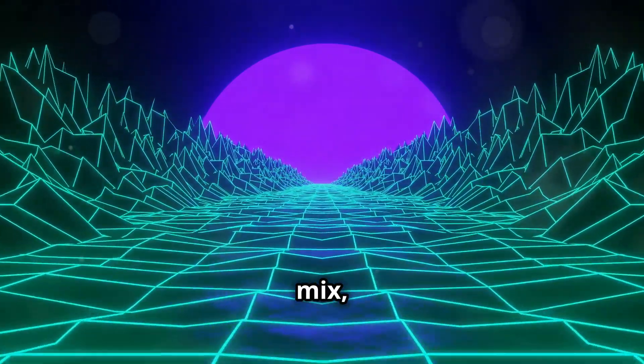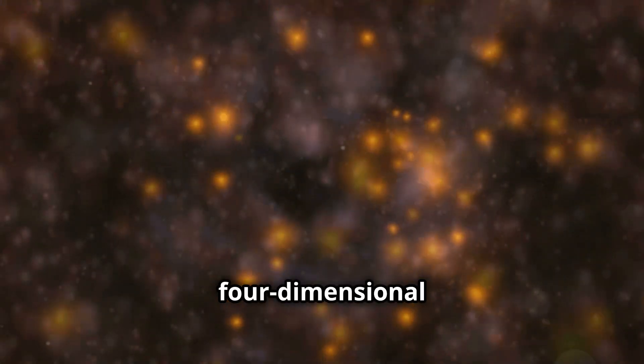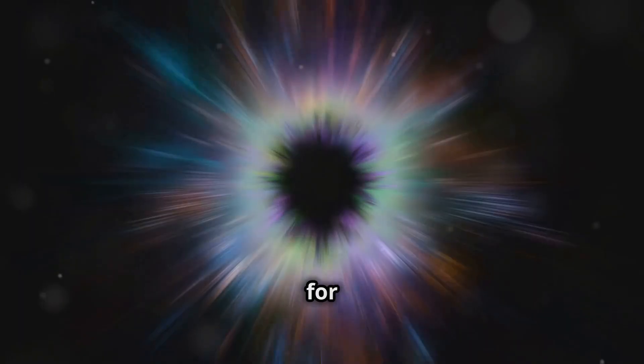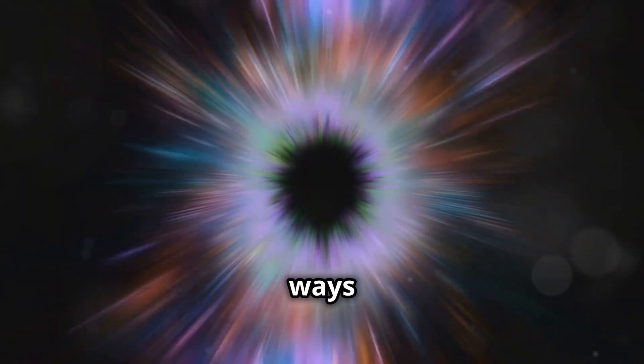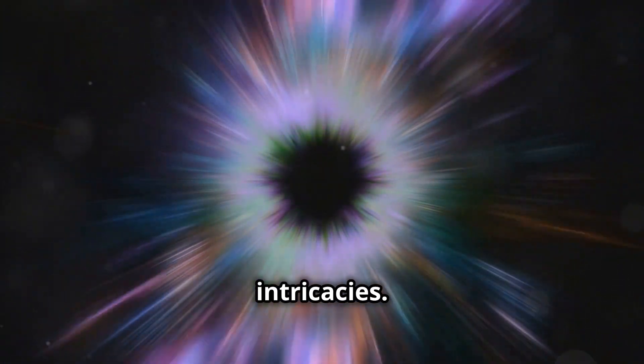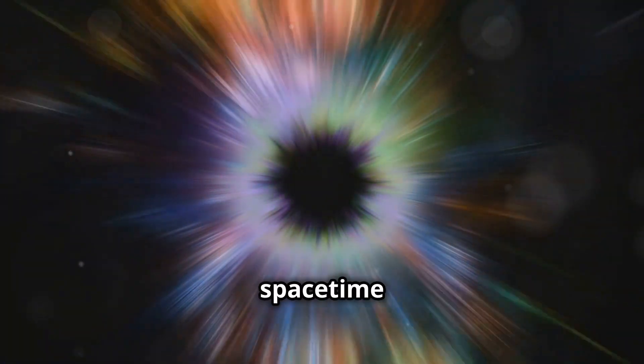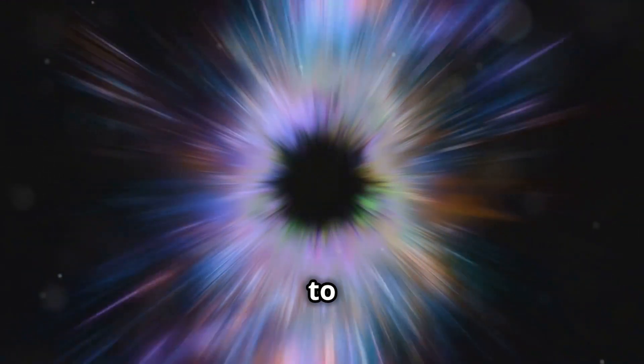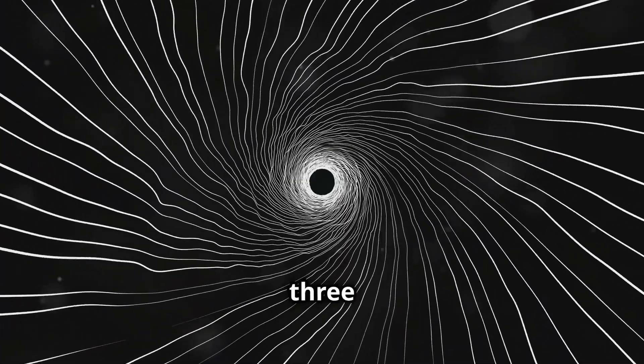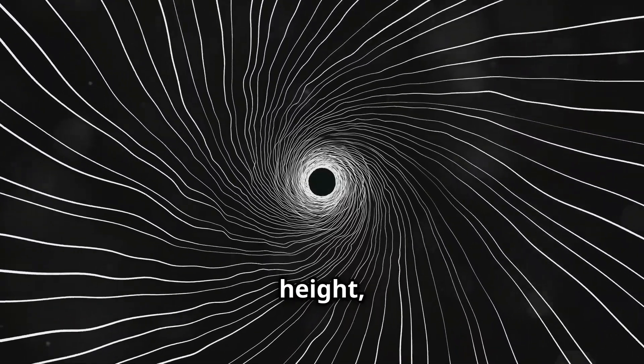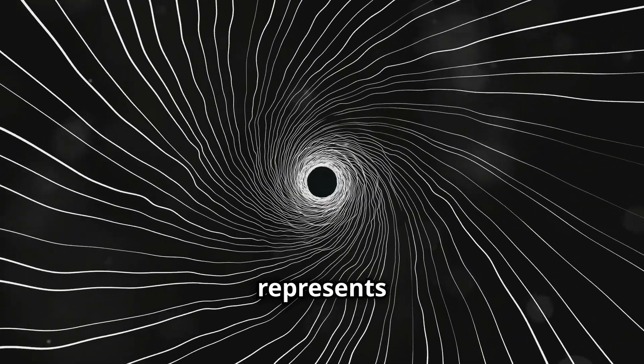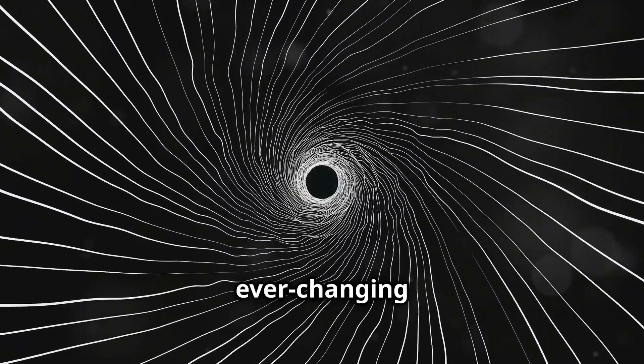Now that we've added time to the mix, we find ourselves dealing with a four-dimensional universe, a concept that can be challenging to visualize. But fear not, for physicists have developed elegant ways to represent this four-dimensional realm, allowing us to grasp its intricacies. One way to visualize space-time is to imagine a grid much like the one we used to represent three-dimensional space. However, instead of just three axes representing length, width, and height, we now have a fourth axis representing time. This grid represents the fabric of the universe, a dynamic and ever-changing entity.